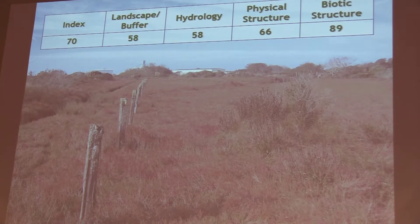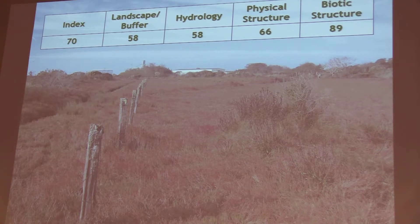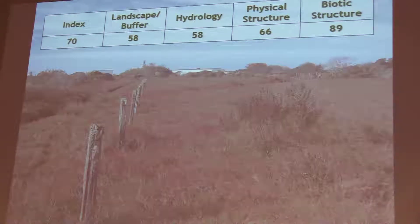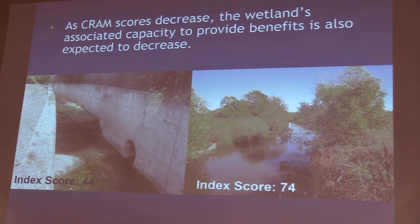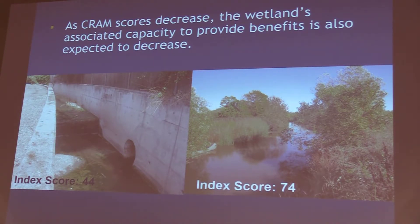For example, a salt marsh in Humboldt County got an index score of 70 by scoring fairly low on buffer and landscape and hydrology, but higher on physical and biotic structure. Just down the road, another marsh got an index score of 72 — essentially the same — but achieved it in the completely opposite way: high buffer, landscape, and hydrology scores, and lower physical and biotic structure scores. This shows why drilling down into CRAM scores is essential. A channel with an index score of 44 will provide far fewer benefits than a creek scoring 74.